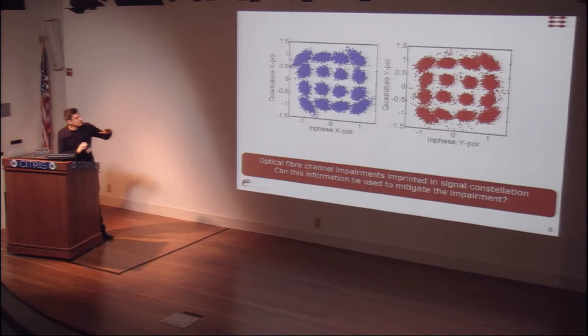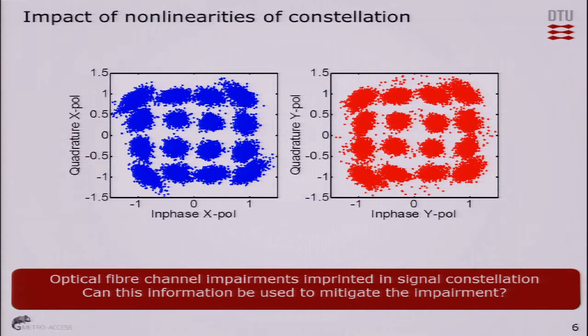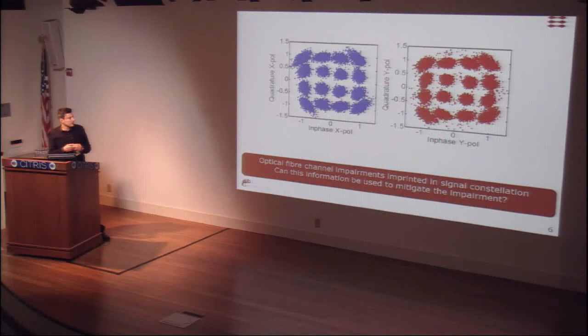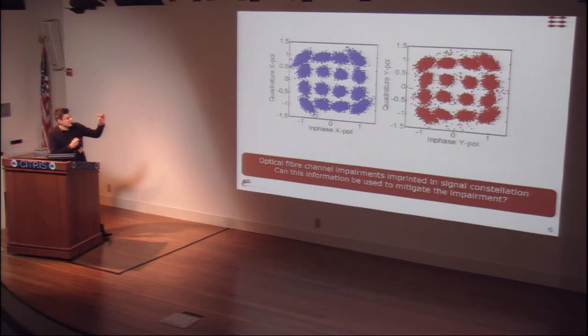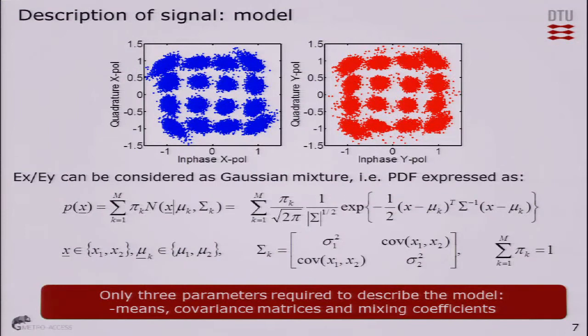As shown in this plot, this is a recovered constellation from a signal which suffers non-linear phase noise — experimentally obtained data. The impairments have a distinct impact on the signal constellation: high power symbols are more scattered and compressed. Optical fiber channel impairments are imprinted on the signal constellation. With additive white Gaussian noise we have circularly symmetric clusters, but due to system non-linearities the clusters are more distorted with a more elliptical shape. We can consider the received signal as described by a Gaussian mixture.